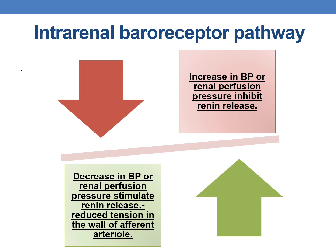Coming to the intrarenal baroreceptor pathway: an increase in blood pressure or renal perfusion pressure inhibits renin release, while a decrease in blood pressure or renal perfusion pressure stimulates renin release. The main stimulus for stimulating renin release is reduced tension in the wall of the afferent arteriole of the kidney.